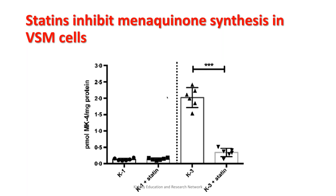As part of their study, they also did a cell culture study looking at vascular smooth muscle cells and the effect of statin on vitamin K synthesis. They showed that administration of the substrate vitamin K3 led to an increase in menaquinone — the active form of vitamin K in vascular smooth muscles — but when done in the presence of statin, this increase was inhibited. So vitamin K metabolism is affected by the presence of statins.